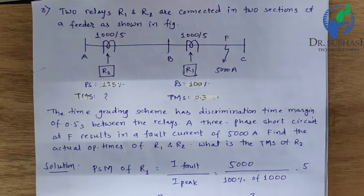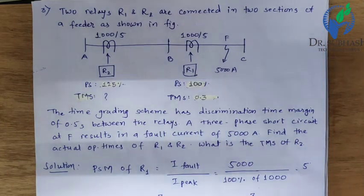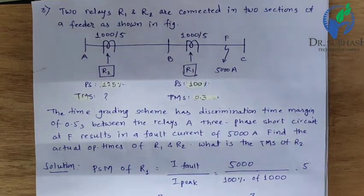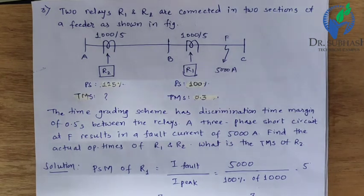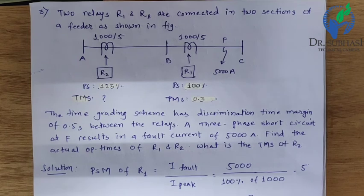Third Numerical: Two relays R1 and R2 are given, with bus bars A, B, and C. Fault current is 5000 A, CT ratings are 1000/5. R1 has plug setting 100% and R2 has plug setting 125%. R1 TMS is 0.3 and we need to find R2 TMS. The time grading scheme has a discrimination time margin of 0.5 seconds. A three-phase short circuit at F results in a fault current of 5000 A.